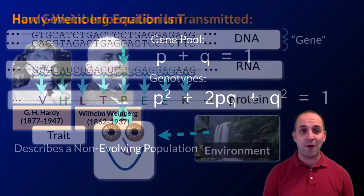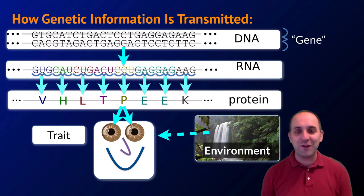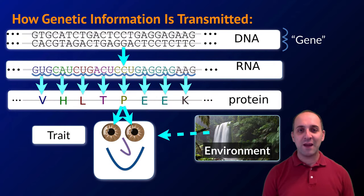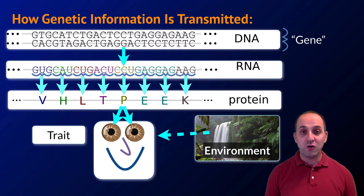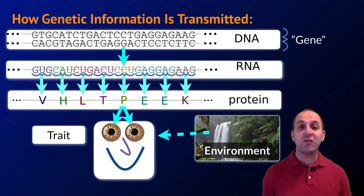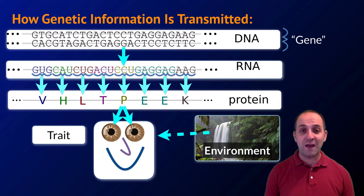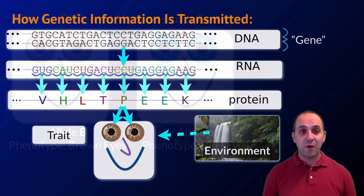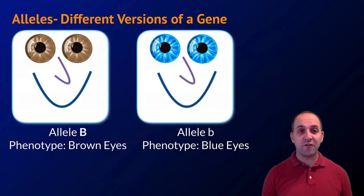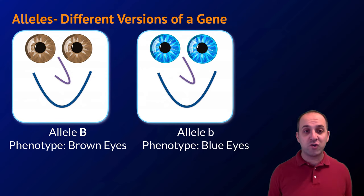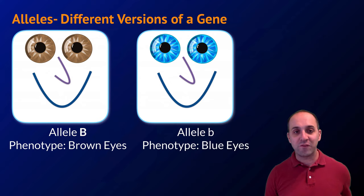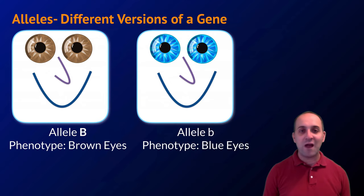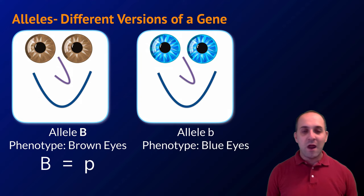This slide shows how genetic information is transmitted — we have seen this before. If you have any questions, go back and check out our modern synthesis video where this was first discussed. Alleles are different versions of a gene. In our simplified smiley organisms, the big B allele is for brown eyes and the little b allele is for blue eyes.